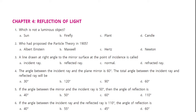Question number one asks: which is a non-luminous object? Non-luminous means an object that does not produce its own light. The sun is a light-producing object. A firefly also produces light. A plant, however, does not produce its own light — it is a non-luminous object.